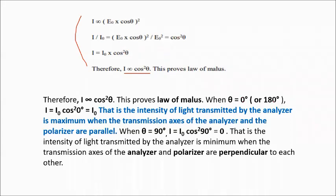When theta is 0 or 180 degrees — parallel or antiparallel — then I equals I-sub-o cosine squared 0, therefore I equals I-sub-o. The intensity of light transmitted by the analyzer is maximum when the transmission axes of the analyzer and polarizer are parallel. When the angle is 90 degrees, I equals I-sub-o cosine squared 90, and cosine squared 90 is 0, therefore I equals 0 — this is minimum. The intensity transmitted is minimum when the transmission axes of the analyzer and polarizer are perpendicular to each other.